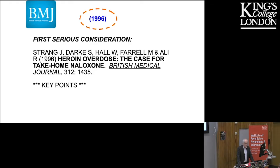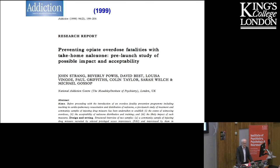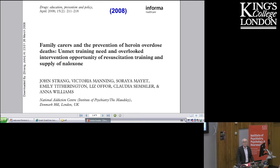From this, we developed the concept of take-home naloxone as public health provision. In a manifesto declaration in the BMJ back in 1996, we articulated this approach, laying out the key steps for its practical implementation. We then began the first studies testing its feasibility and acceptability to target populations of drug users themselves in and out of treatment and to their families, who are very much an overlooked but important intervention workforce.